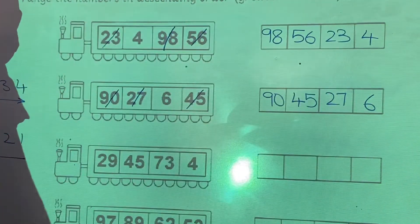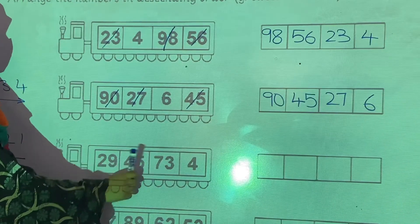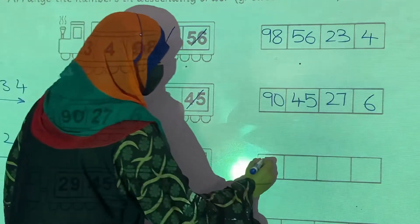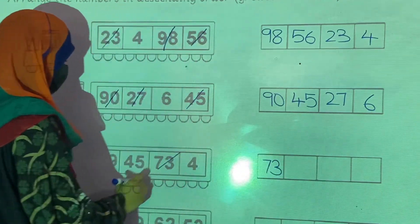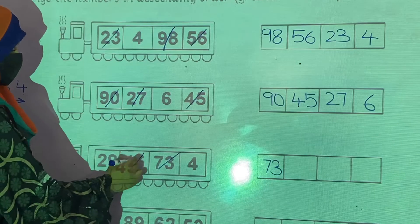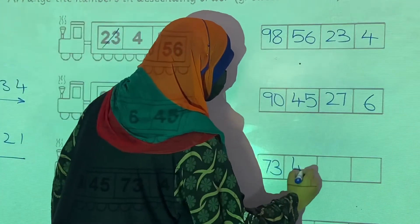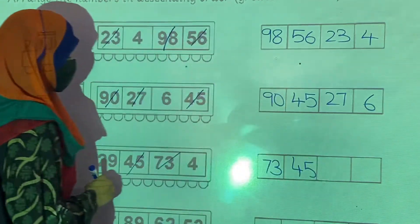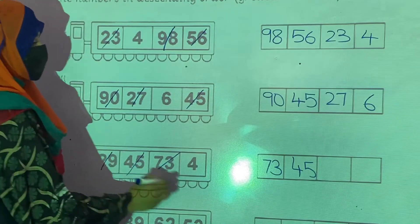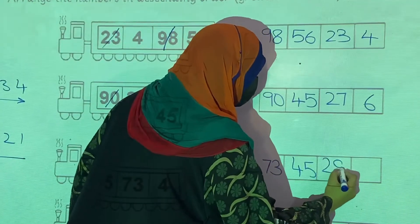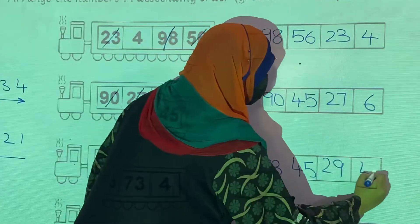Now in example number 3. 73 is the greatest number, so in the first box we write 73. After 73, 45 is the greatest number, so we write 45 in the second box. After 45, 29 is the greatest number, so we write 29. And in the last box, 4.